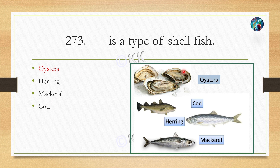Oysters are a type of shellfish, and pearls are also obtained from them. The remaining options — Cod, Herring, and Mackerel — are types of fish. Let's see our next question.